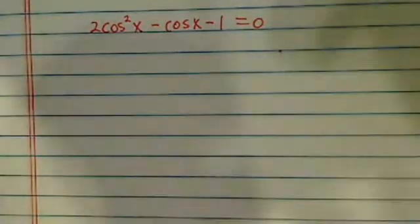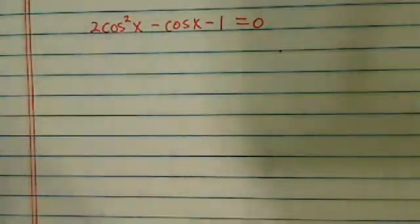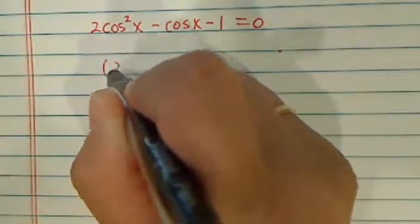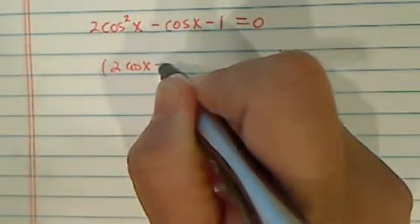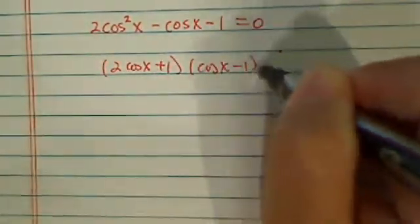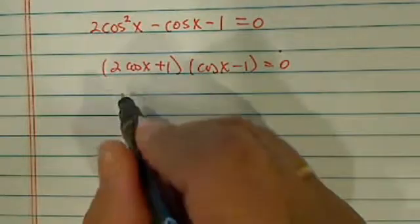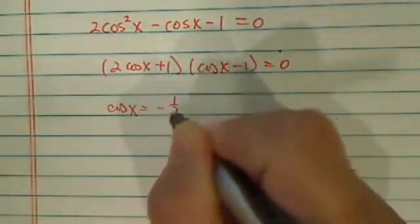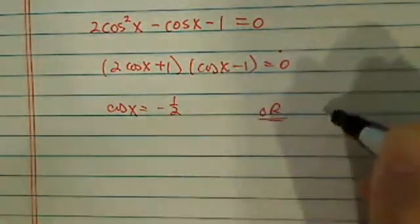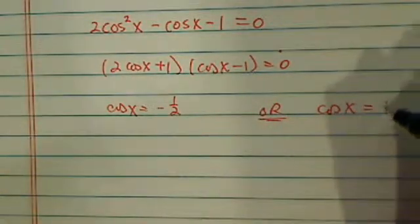First thing you want to do is make sure you can factor this. This is a relatively easy one to factor. So you have 2 cosine of x plus 1 times cosine of x minus 1, that's equal to 0. So you have two solutions: you have cosine of x equal to minus half, or cosine of x is equal to 1.